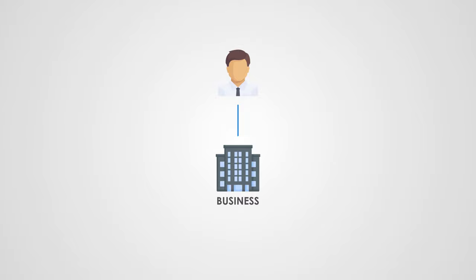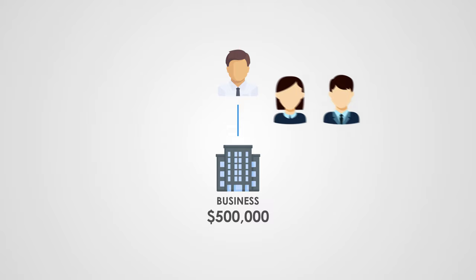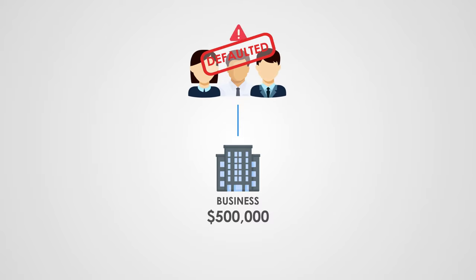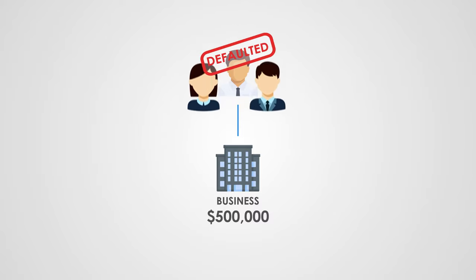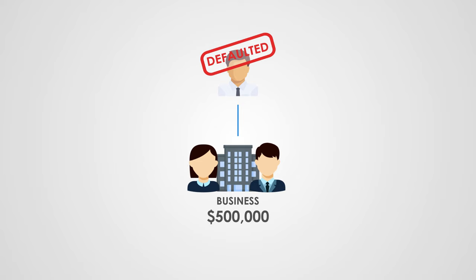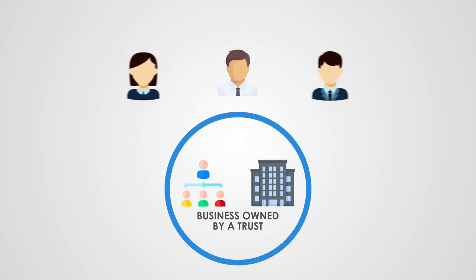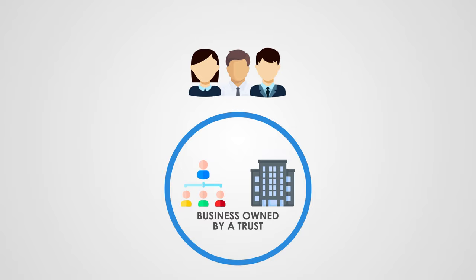So that's family trusts in a nutshell. Now, there are certain situations where I would definitely advise going the family trust route. The first one is if you own your business in your personal name and your retained earnings are more than $500,000. In this instance, your business is pretty much vulnerable to your personal creditors. So if things were to go wrong and you defaulted on certain debts, your creditors could go after your company. Having a trust own your business would then protect it from your personal creditors.